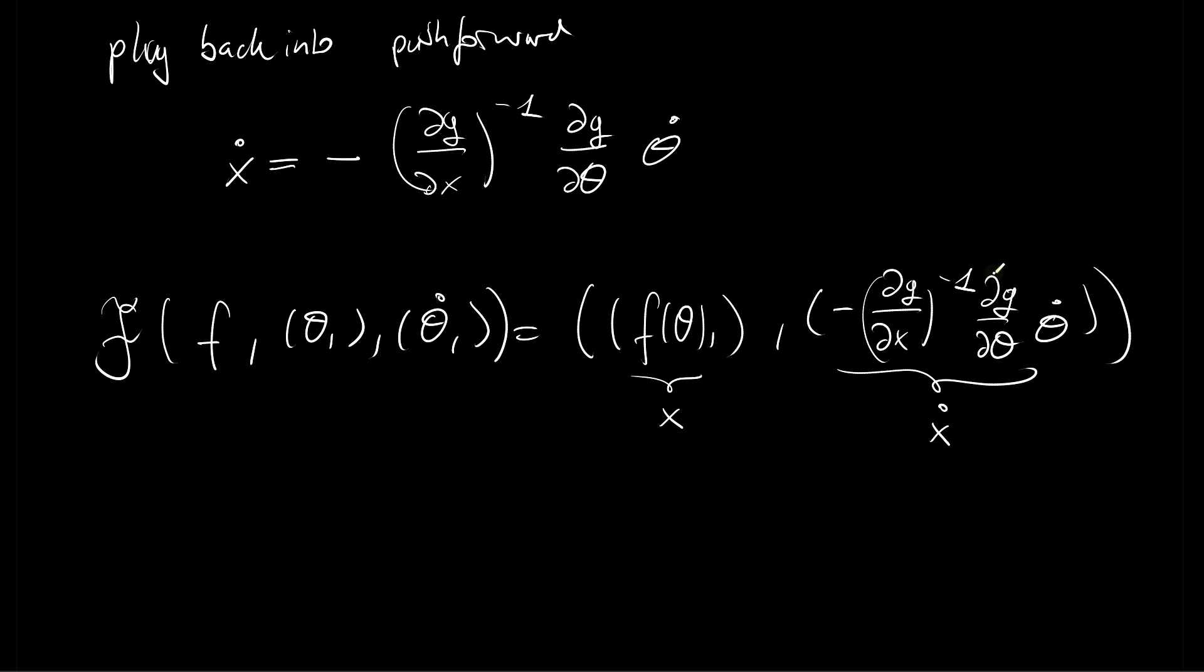And an obvious question here is like, how do we obtain this dg by d theta and dg by dx? And here we could just use automatic differentiation. So in our case, forward mode AD. So as said, those are both real-valued numbers. And let's say we obtain them by forward AD. So obtain by forward mode automatic differentiation.